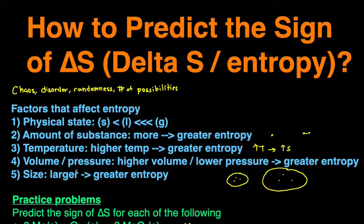Lastly, size. The larger the molecules, the greater the entropy, because larger molecules will have more bonds, so there will be more movement. Also there's more electrons, so there's more movement.